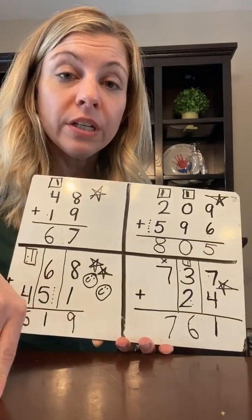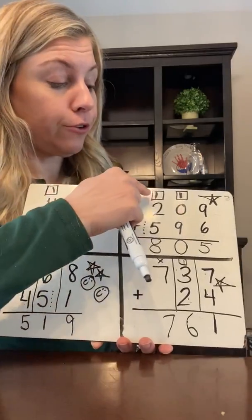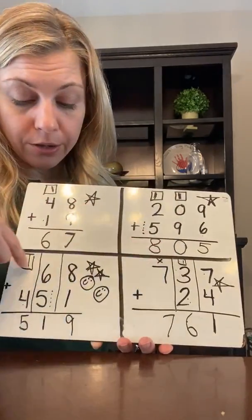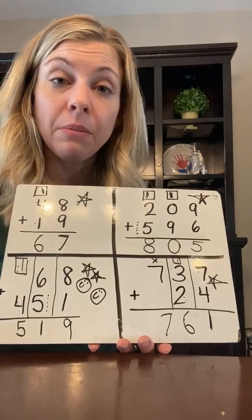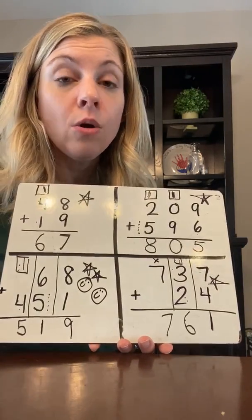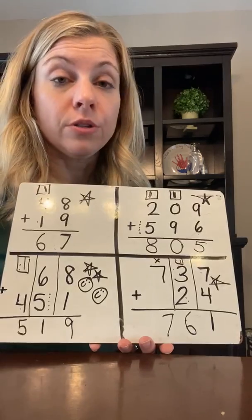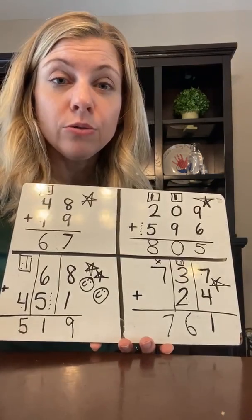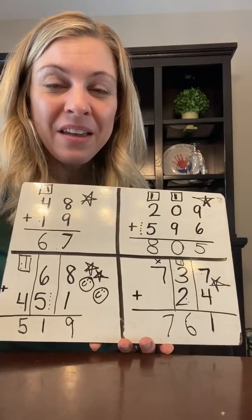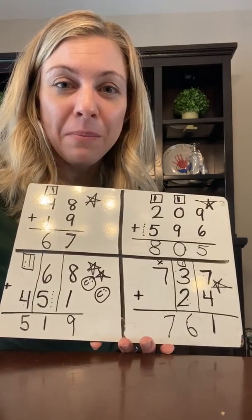If you only got one right, my question is, did you forget to add the one when you moved it? That's the most common mistake I usually make and maybe it was something simple like that or maybe you just added wrong. You can draw dots to add. You can count on. You can use a number line. Use your strategies, okay? Have a great weekend and I will see you on Monday.